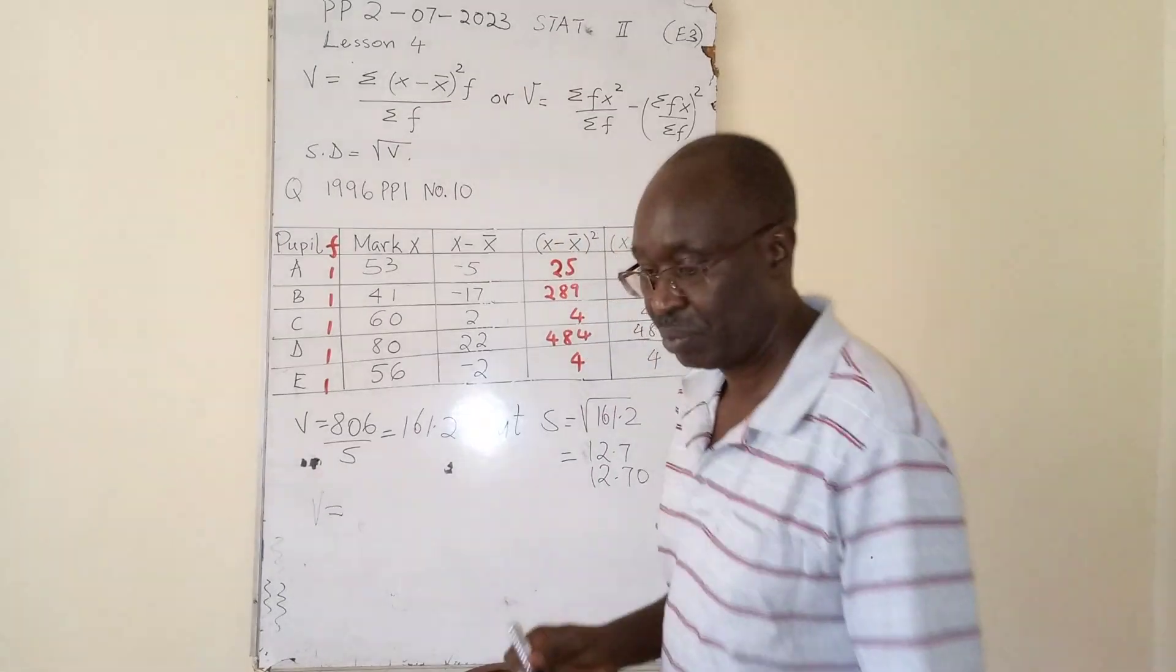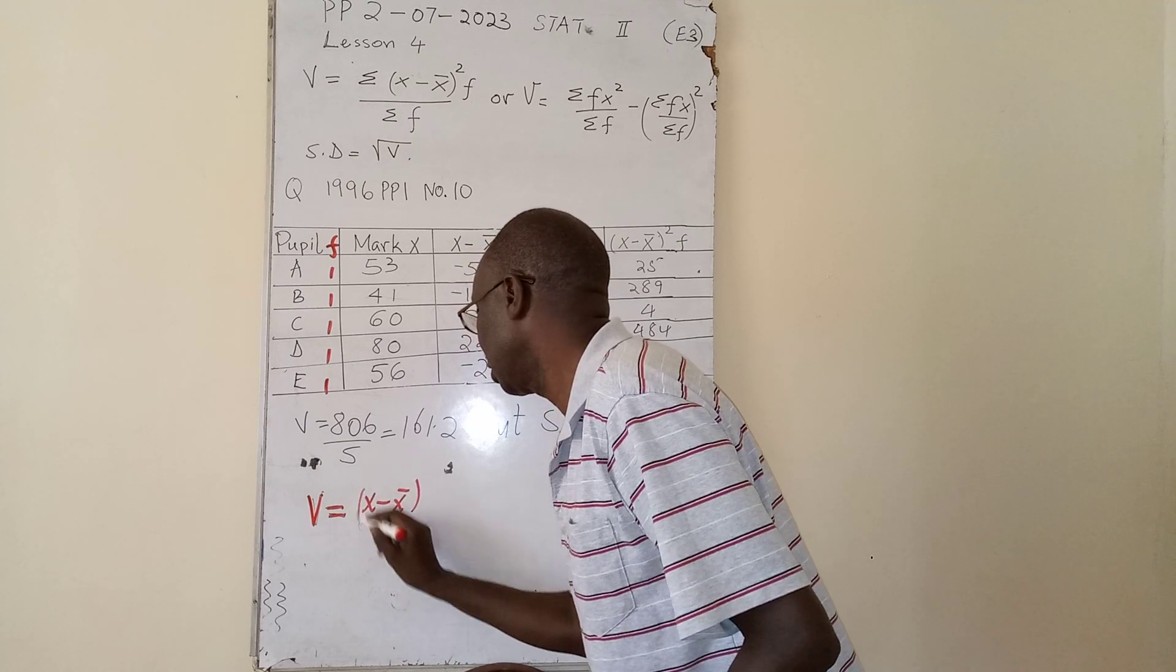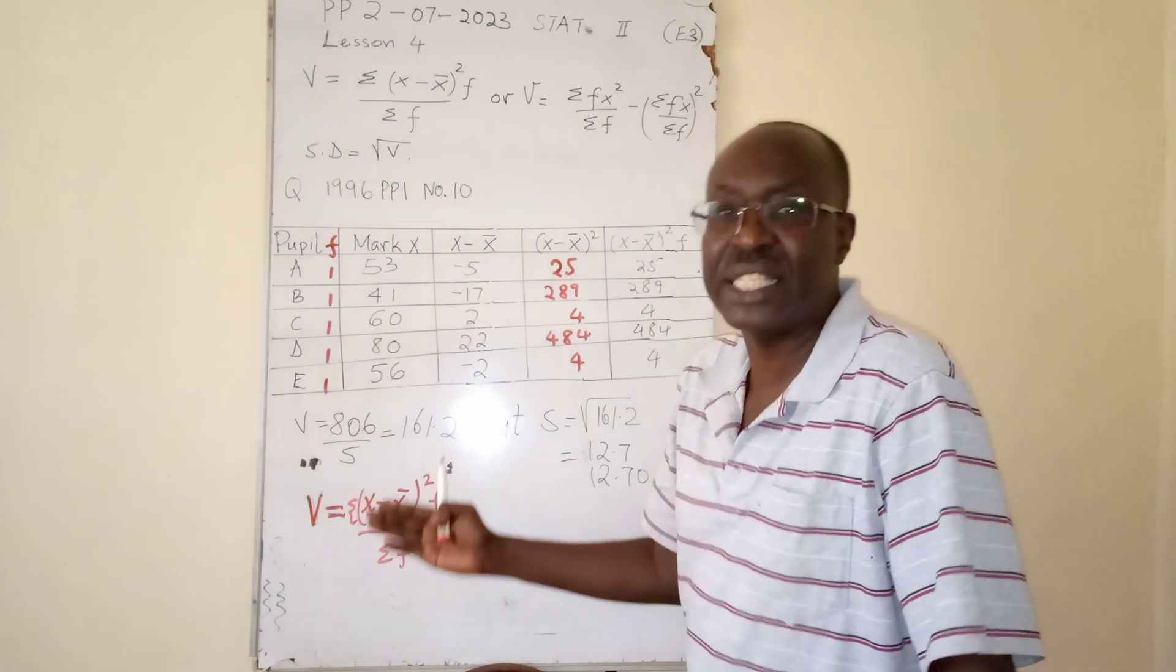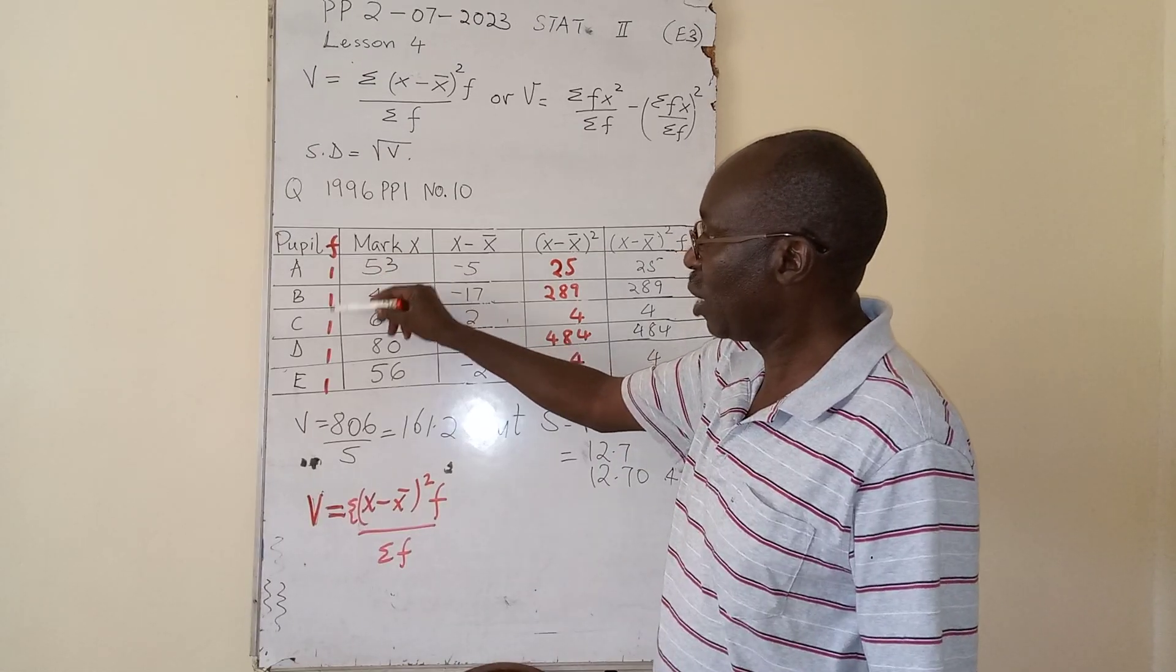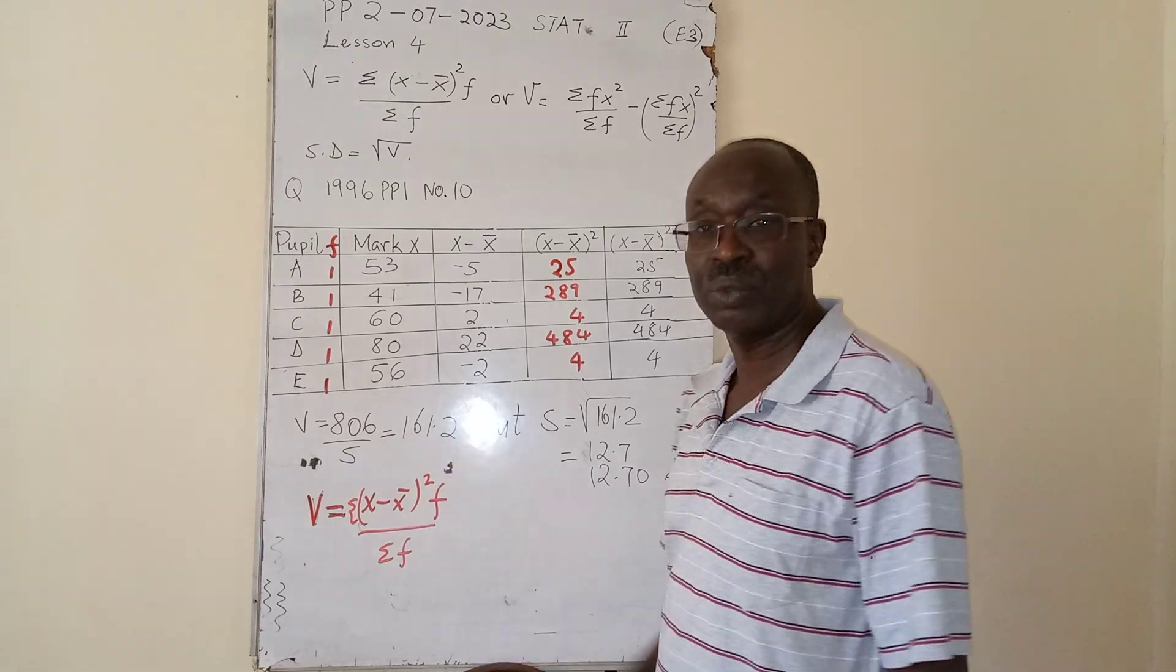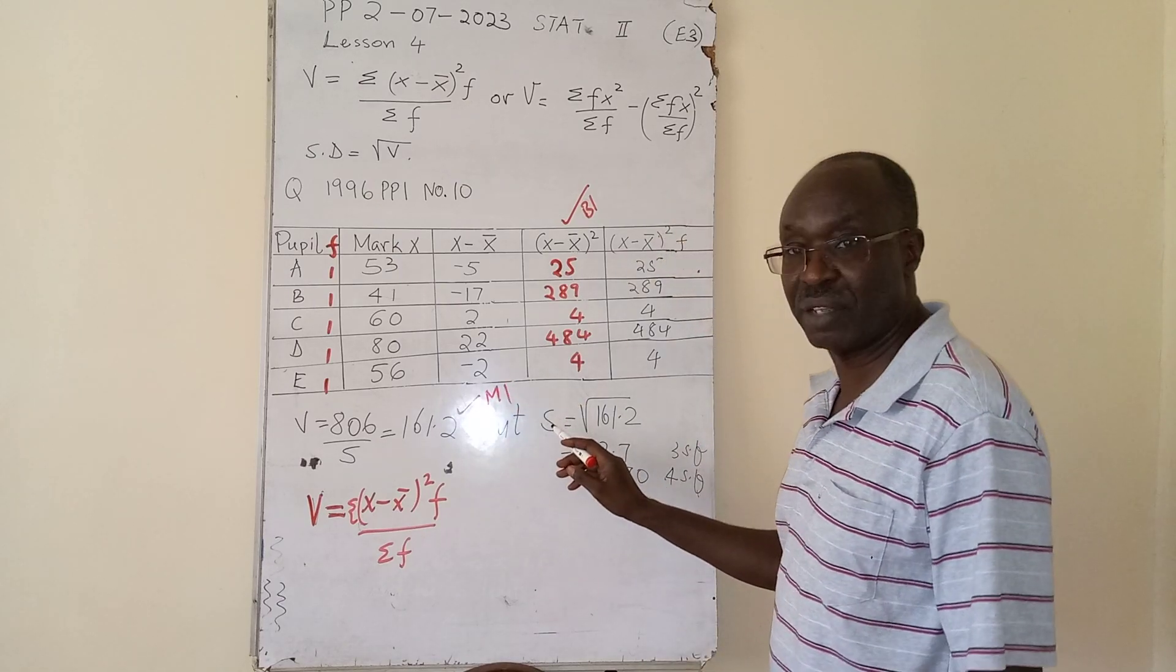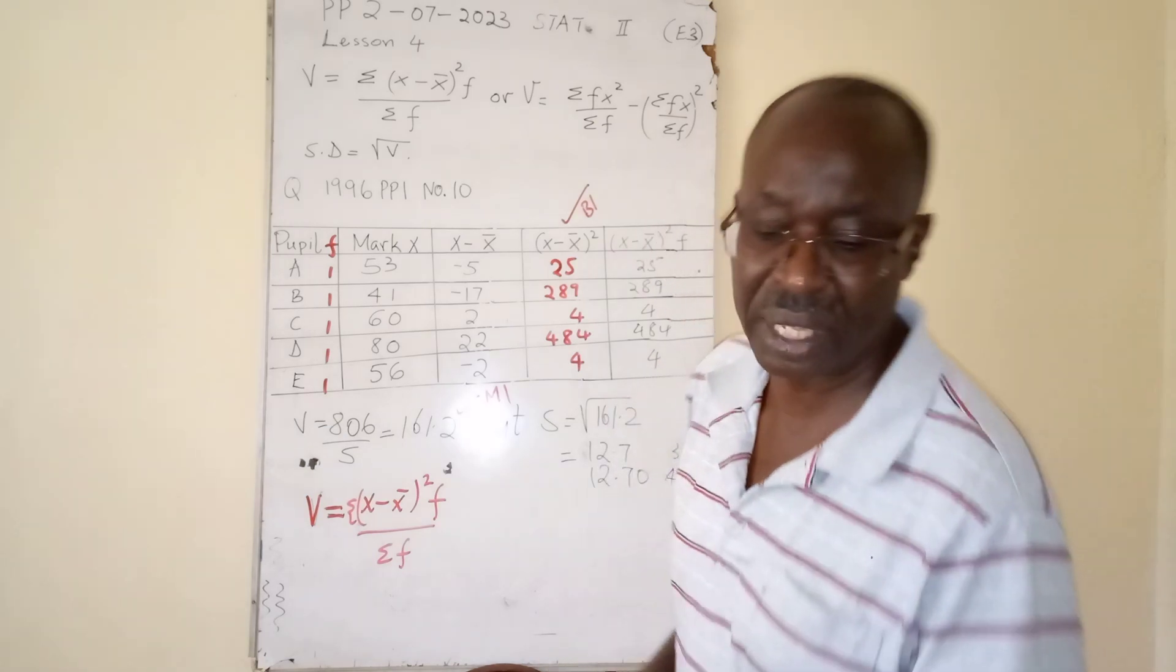The total comes to that. The sum of those products is 806. The sum of the frequencies is 5 - 1 plus 1 plus 1 plus 1 plus 1 is 5. When you compute it, 806 divided by 5 gives you 161.2. So that becomes our variance. To get standard deviation you get the square root.